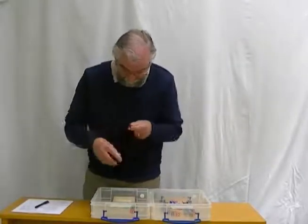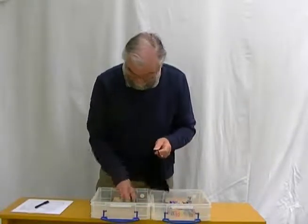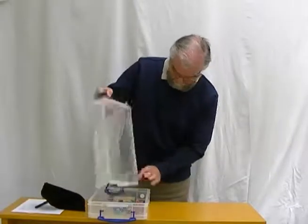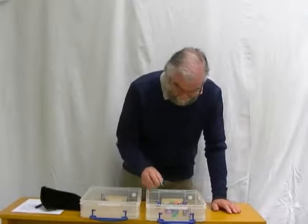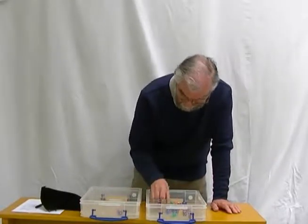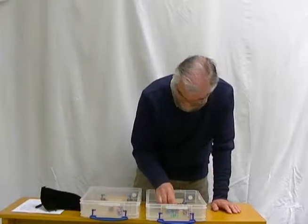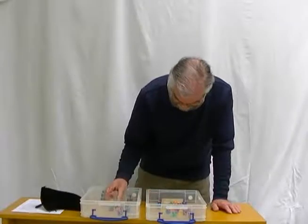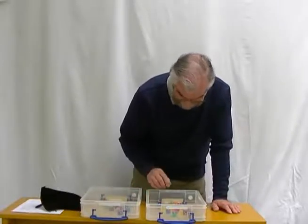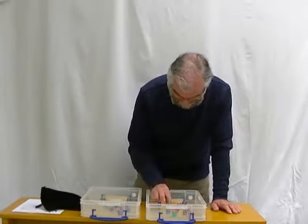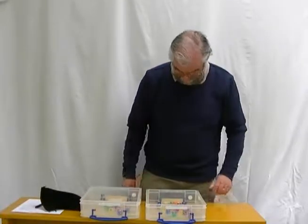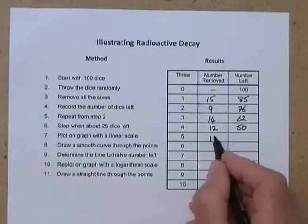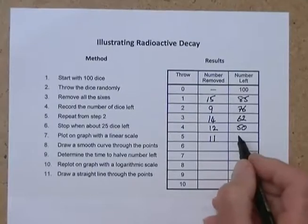We'll take those out of circulation and throw again. This time we've got one, two, three, four, five, six, seven, eight, nine, ten, eleven. Eleven dice this time, so if we take those out we've got thirty-nine left.